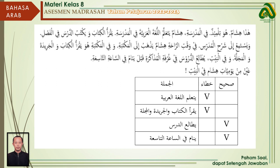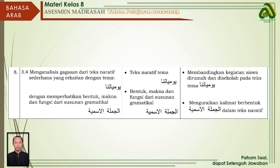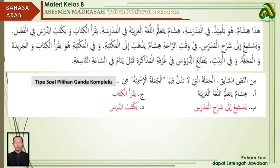Masih pada kompetensi dasar yang sama tentang tema Yaumiyatina, yaitu menguraikan kalimat berbentuk al-jumlah al-ismiyah dalam teks naratif. Untuk soal ini masih merujuk pada teks pada soal sebelumnya. Tipe soalnya adalah pilihan ganda kompleks. Minan nasris sabiq - dari teks di atas, al-jumlatul lati latadul lufiha jumlah ismiyah, yaitu jumlah yang tidak menunjukkan al-jumlah al-ismiyah.